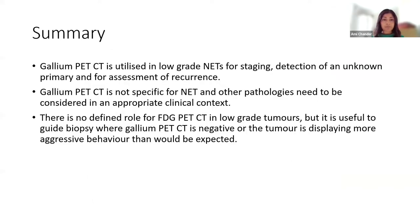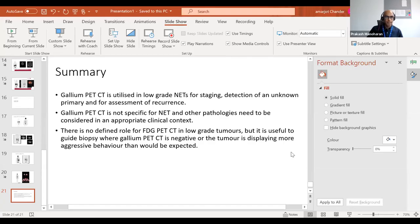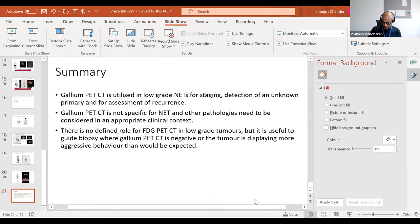Another case: a high-uptake lesion that turned out to be a splenunculus. CT characteristics are very much like the spleen, and on arterial phase CT it would enhance the same way. This should not be mistaken for metastatic disease — it's in close proximity to the spleen here, but after splenectomy, splenunculi can be dotted around the abdominal cavity, so it's always important to keep that in mind. And here: a maximum intensity projection showing physiological pituitary uptake in practically everybody, but with an additional focus of activity elsewhere within the skull — this turned out to be a meningioma confirmed on MRI.